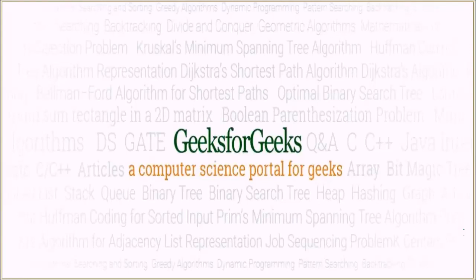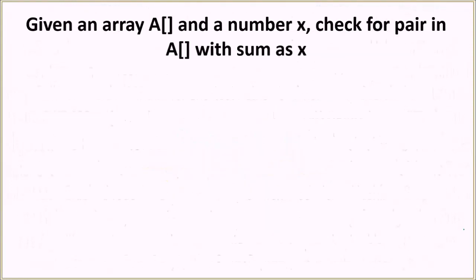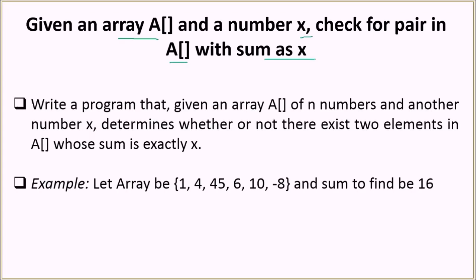Hello everyone and welcome to GeeksforGeeks. The problem we have today is: given an array A and a number X, we have to check for a pair in array A with the sum equal to X. As input we are given an array A of N numbers and another number X, and we have to determine whether or not there exist two elements in A such that their sum is exactly equal to X.